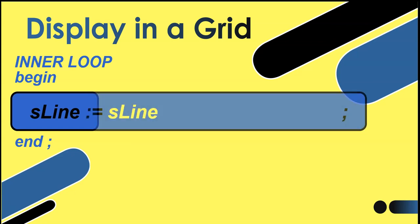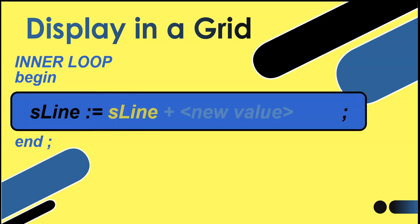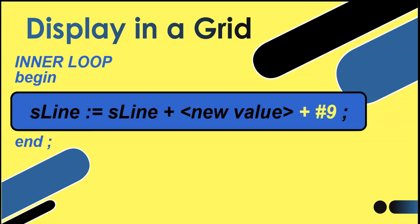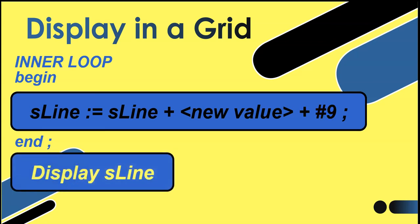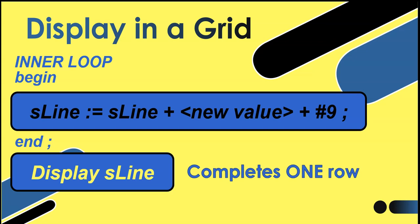We're going to take that sline variable and give it whatever's currently in sline and add on the new value. Because we want a grid format, we're going to add a tab at the end — using hash 9 — so there's a gap before the next value is added. Sometimes you might put that hash 9 in front depending on the situation. Once the inner loop is completed and sline has all the values with tabs, we're going to display sline, completing one row of our grid.